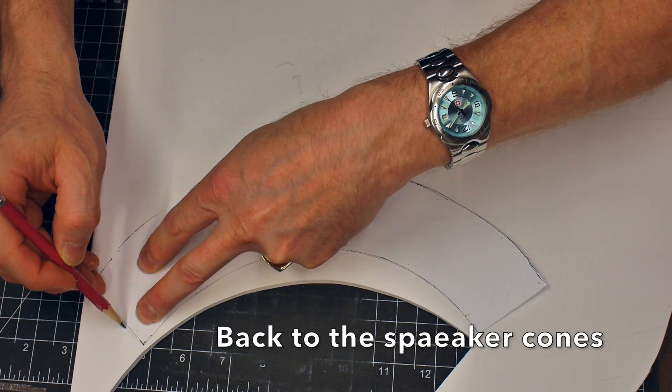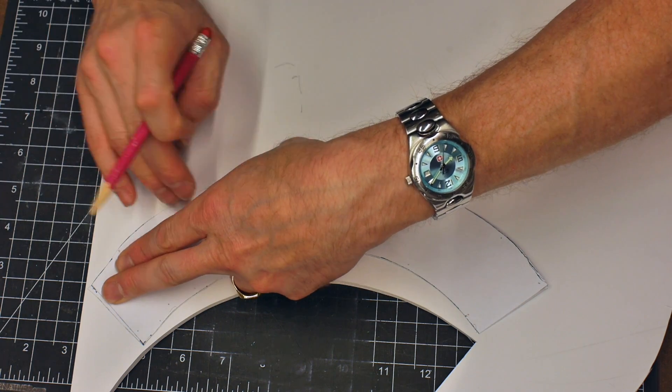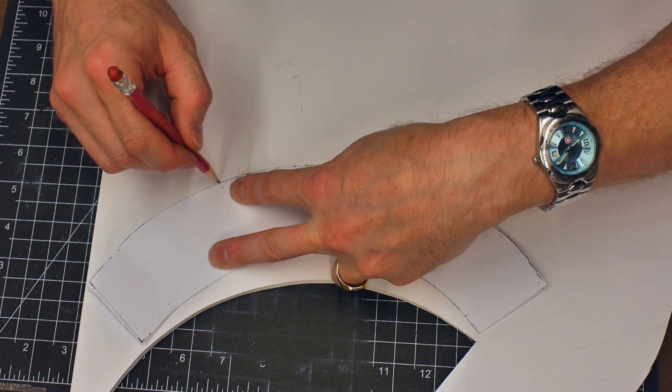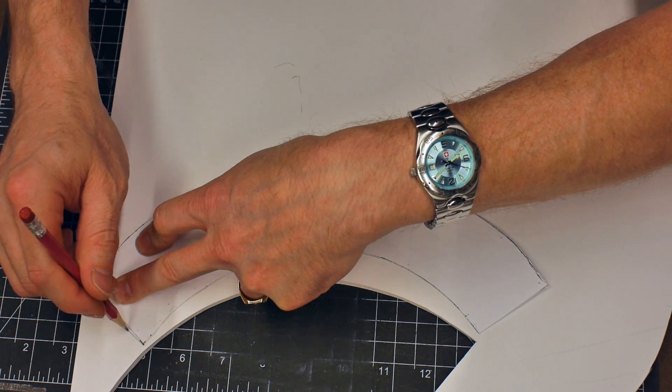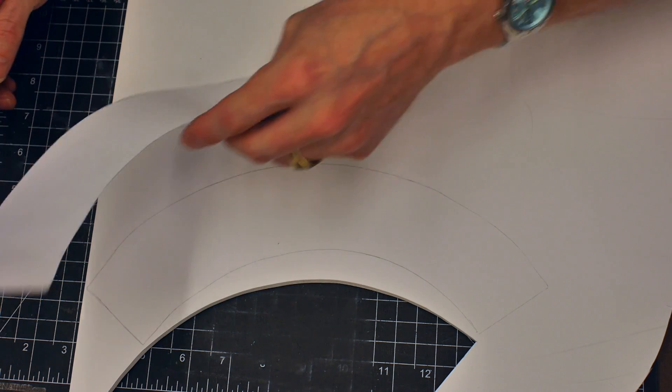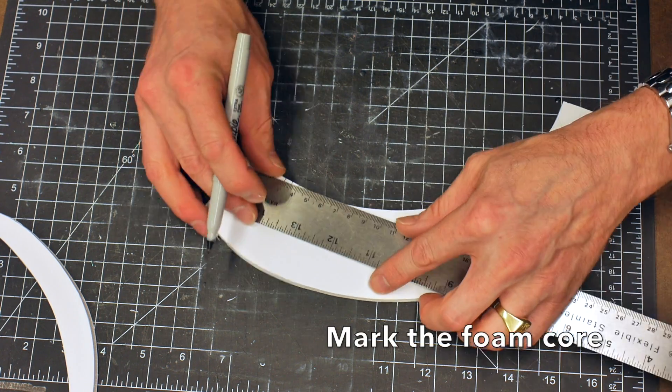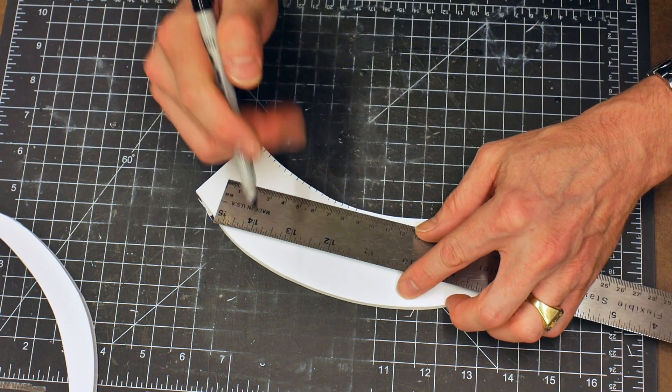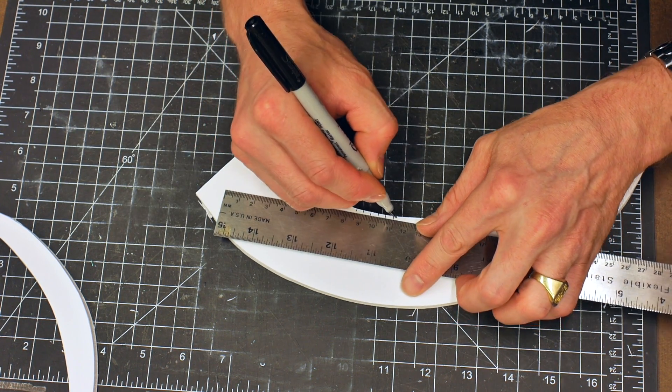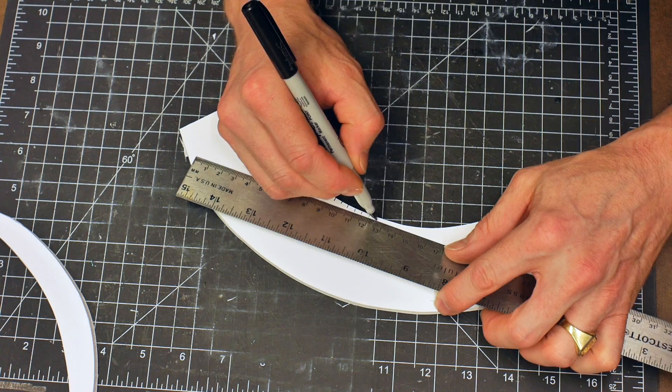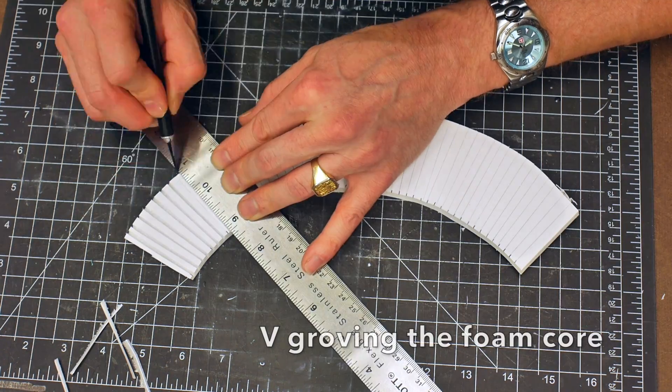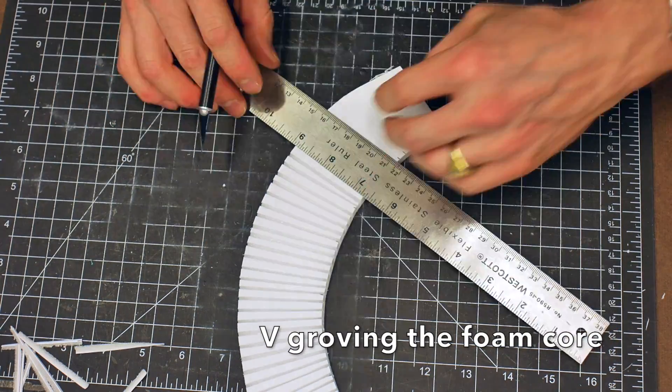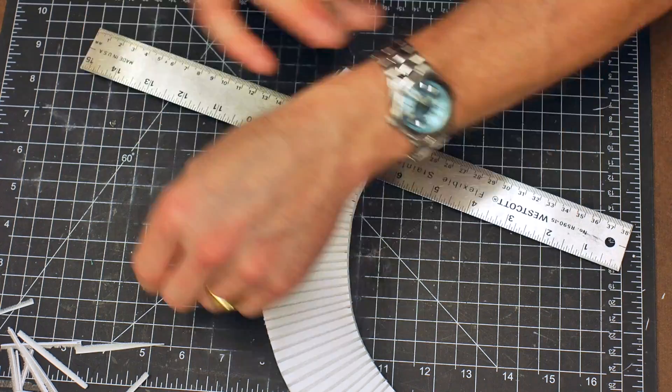So let's get back to building the speaker cones. I'm going to take that paper pattern from before and trace it onto my foam core and cut that shape out. Next, I'm going to mark or grid the edges of the foam because we're going to use some v-cuts here and put that into this curved piece of foam that we have so that we can actually wrap it around the end of the frame that we've made.